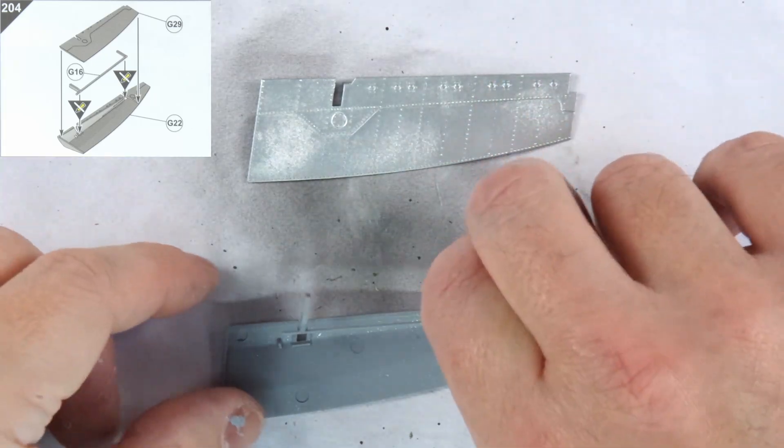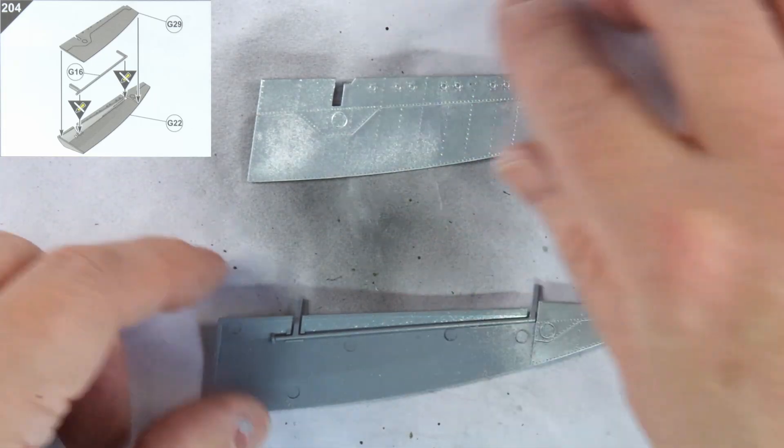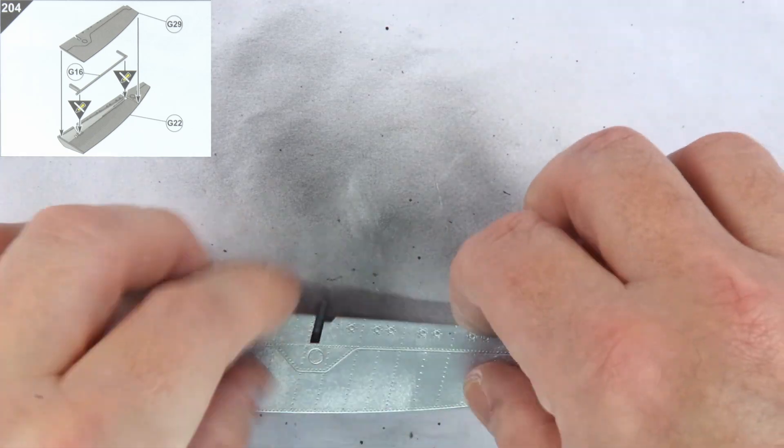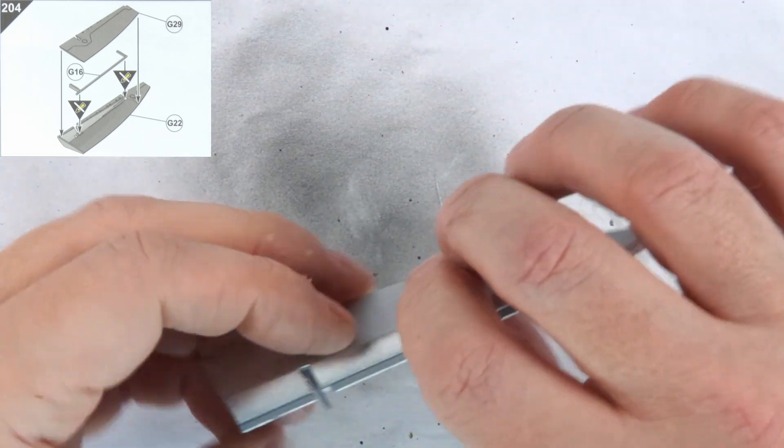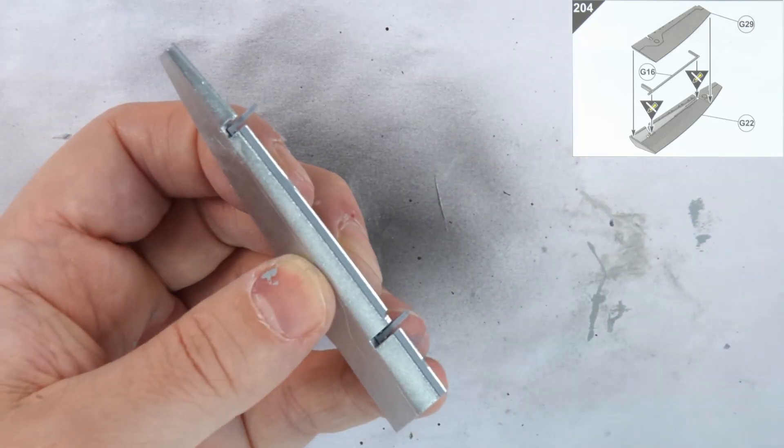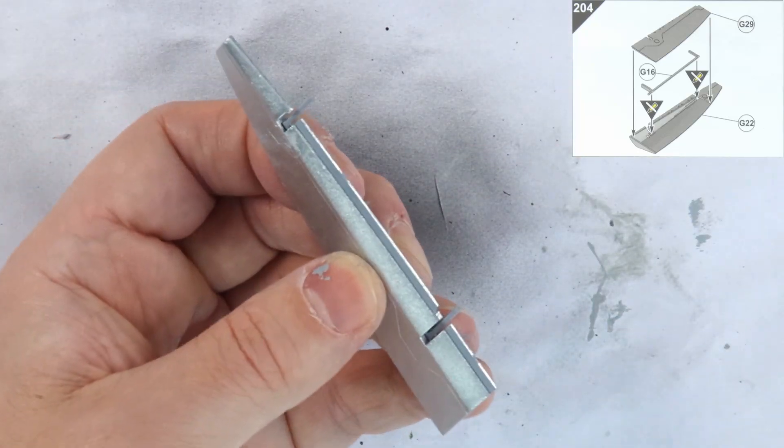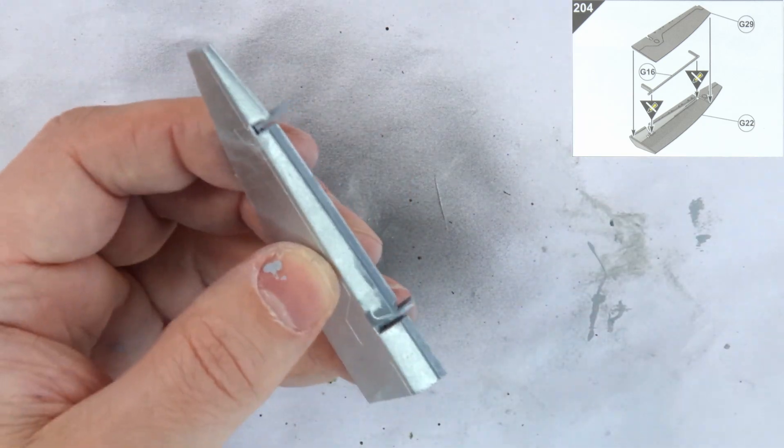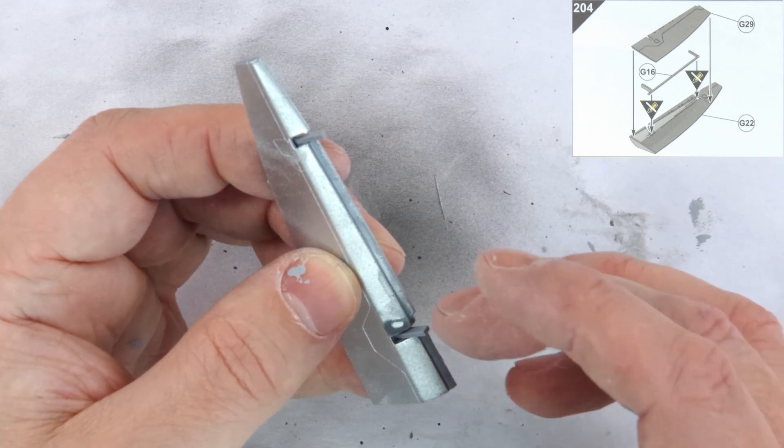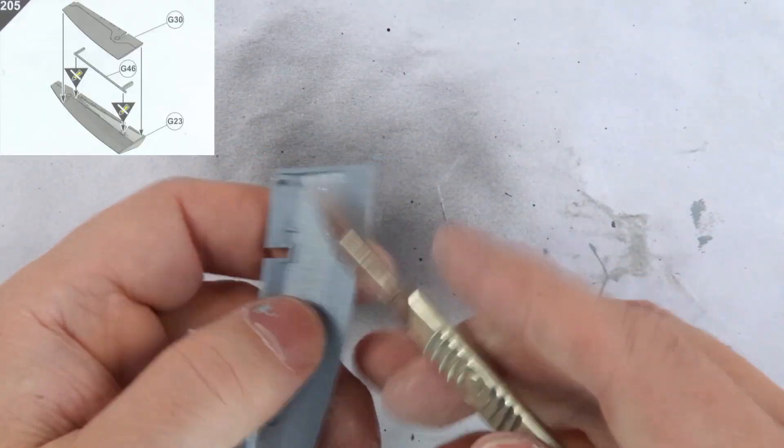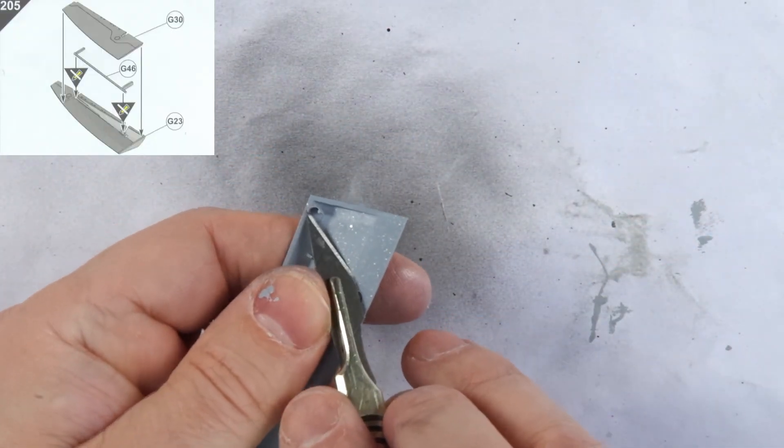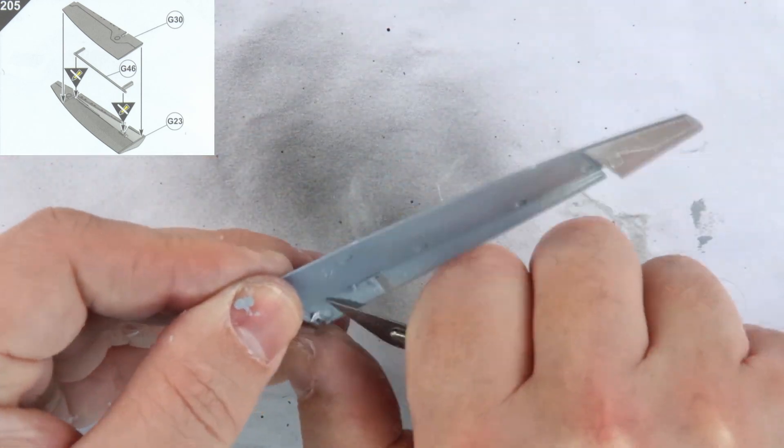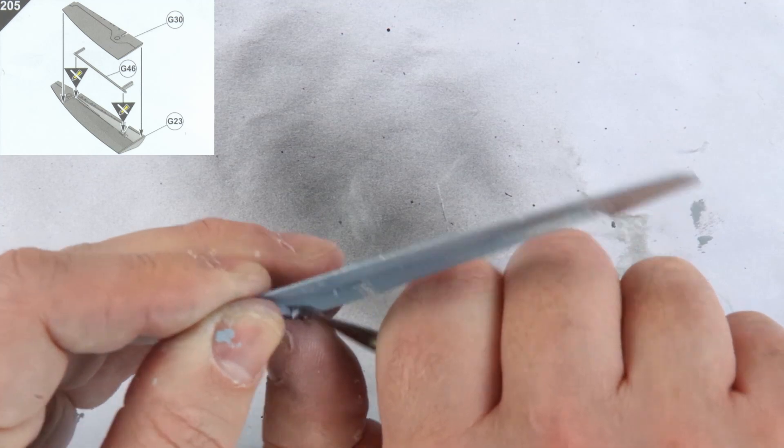Moving on, we cover the construction of the port aileron in step 204, which is a pretty simple affair. Note that the inner piece is what attaches to the wing, so it's only necessary not to cement it until you know what position you want your ailerons, at which point you can fix them. Step 205 is exactly the same for the starboard side, and I'm only really showing it here because mine had a substantial piece of flash that needed carving off before I could do anything else with it, as you can see. I also managed to put a nice fingerprint in the silver spray, so I needed to deal with that here as well before I set it aside.